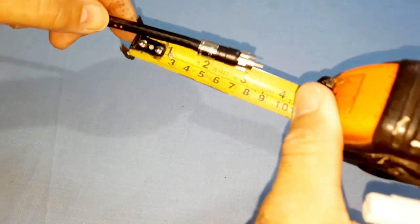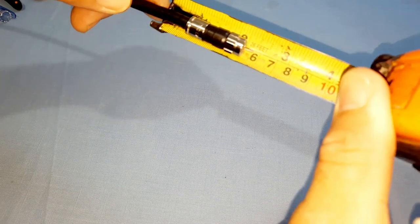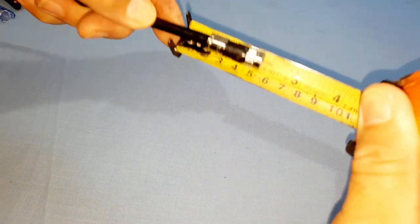Measure and mark. At each end of the coaxial cable, measure 5 cm from the end and accurately mark using a pencil or marker.